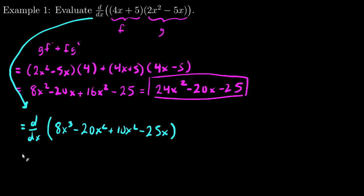And, I would reduce this a little bit, combining like terms. So, I would get 8x^3 - 10x^2 - 25x. And, now, I can just use regular polynomial derivatives to get 24x^2 - 20x - 25.